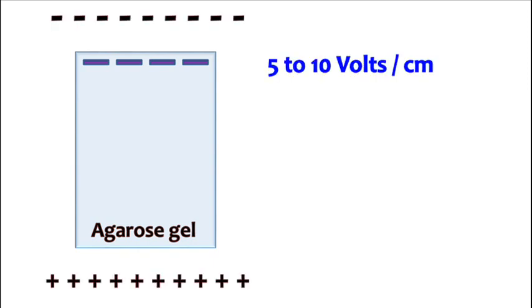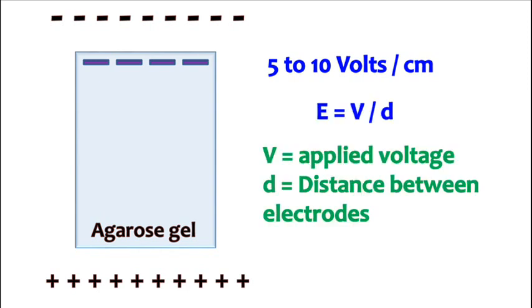Electrophoresis is carried out at an electric field of 5 to 10 volts per centimeter. Remember, electric field is the applied voltage divided by the distance between the electrodes. The direction in which the DNA runs is from negative to positive.